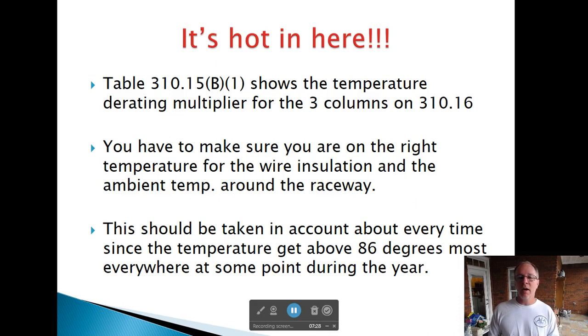Table 310-15-B1 shows the temperature de-rating multiplier for the three columns on 310-16. And that's the kicker there. A lot of guys get tripped up because they look at the three columns on this table and think, which one do I need? Well, it's based on your insulation type. If you look on Table 310-16, there are three columns—your TW, THW, and THHN, or your 60, 75, 90. This table has the same columns. So if we use the 90 degree column on Table 310-16, we need to use the 90 degree column on Table 310-15-B1. You have to make sure you're on the right temperature for the wire insulation and the ambient temperature around the raceway.